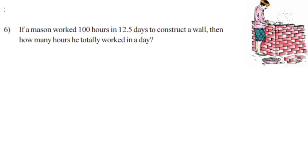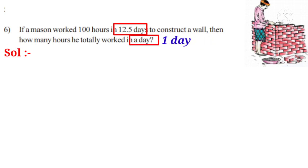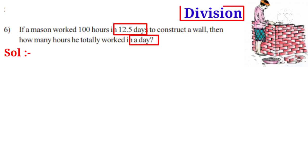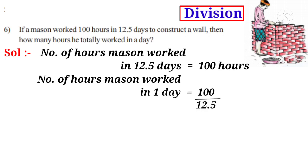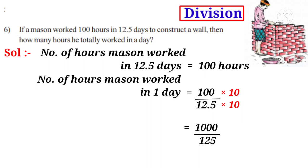Sixth problem: If a mason worked 100 hours in 12.5 days to construct a wall, then how many hours did he totally work in a day? Solution: Number of days decreased from 12.5 to 1 day, so the operation is division. Number of hours the mason worked in 12.5 days is 100 hours. Hours in 1 day equals 100 by 12.5. Multiplying by 10 gives 1000 by 125. On simplification by 125, the answer is 8 hours.